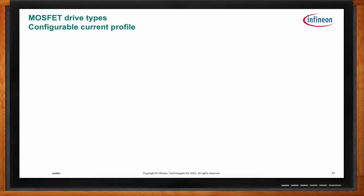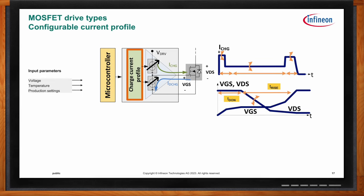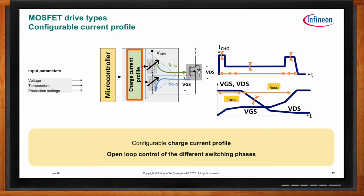An improvement is a configurable current profile — instead of one constant current during turn-on or turn-off, you have a multi-phase charge current profile. This gives the ability to adjust turn-on delay time independently from rise time. You can apply a higher pre-charge current to reach the Miller plateau quickly, then set the desired slew rate, and after the EMC danger zone, hit it again with a higher post-charge current to reach full enhancement with lowest power dissipation as quickly as possible. However, this is still open-loop control.